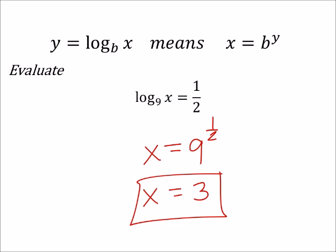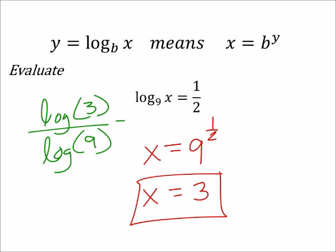Now we could go back and check this using the change of base rule, right? We could say we're going to take the common log of x was 3 and divide it by the common log of 9. Just to see in our calculators that it equals 1 half. And hopefully that would confirm it for you guys as well.